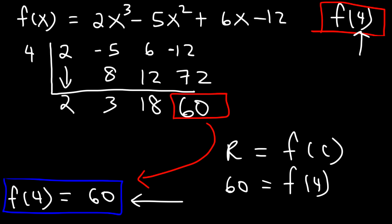And so that's the basic idea behind the remainder theorem. It's very useful for evaluating functions. As you can see, it took us a lot less time to basically find this value of 60 using synthetic division instead of plugging in 4 into this expression. So synthetic division is very useful. Let's try another example. So let's say that f of x is 3x to the 4th power minus 7x cubed minus 9x plus 12.